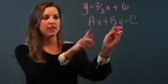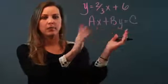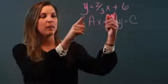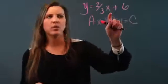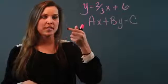So first you notice that in the standard form, I have x and y both on the left side of the equation. In my y equals mx plus b form, x is still over on the right side, so I'm going to have to bring x over to the left side.